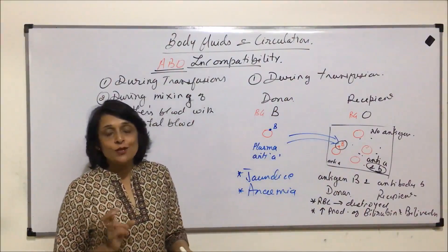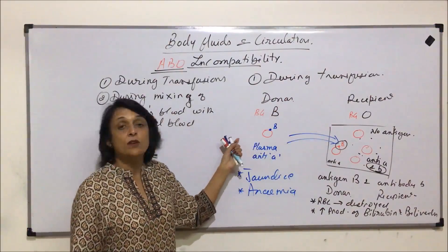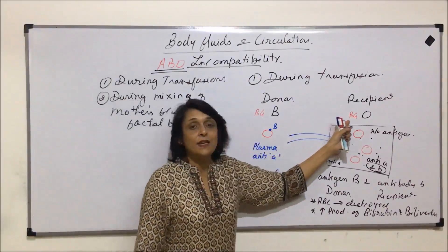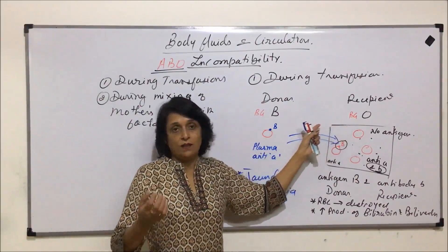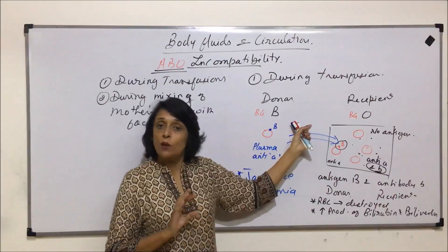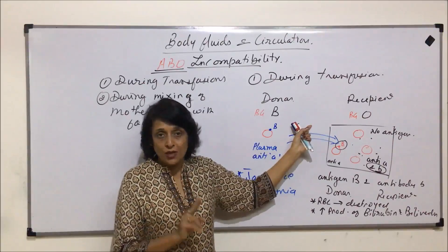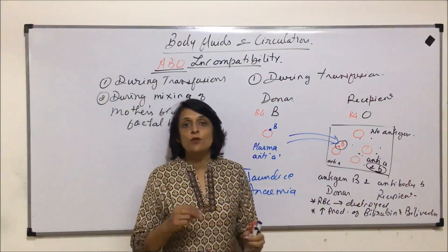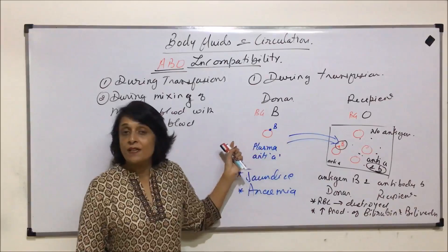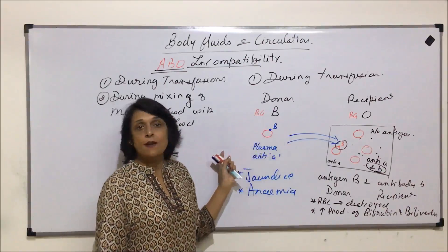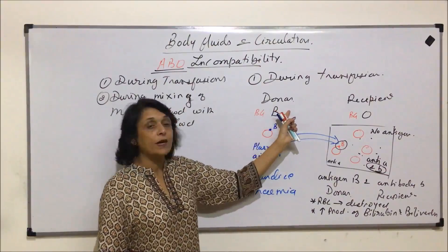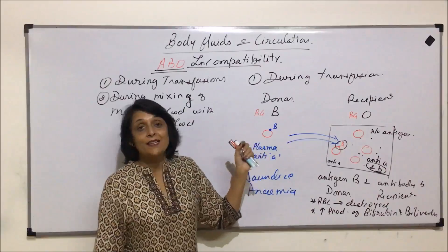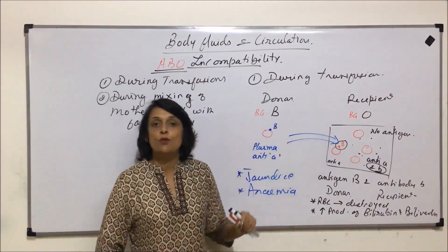When transfusions are done, blood groups must be properly matched. The best option is if the recipient has blood group O, then the blood transfused should also be O, so the same type goes in and there is no complication. We will now take the reverse situation where the recipient has blood group B and the donor is O — the universal donor.